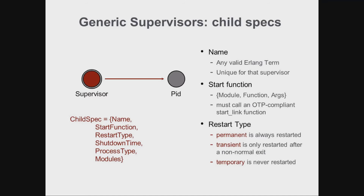The next argument in the tuple is a list of one or more child specifications. The child specification contains all the information the supervisor needs to start, stop and delete its child processes. The specification is a tuple with six elements. We have the name — a unique identifier for a particular supervisor — and the start function, which is a tuple of the form module, function, arguments. This function must call the start_link function in your behaviour.